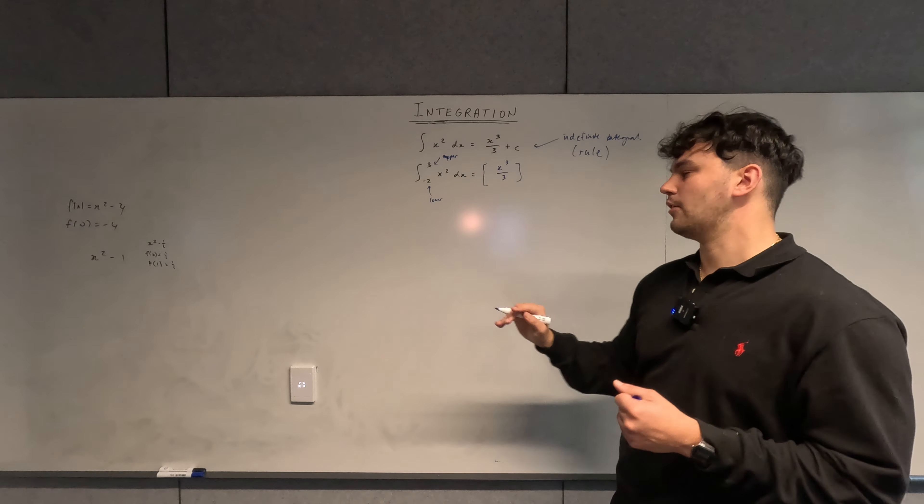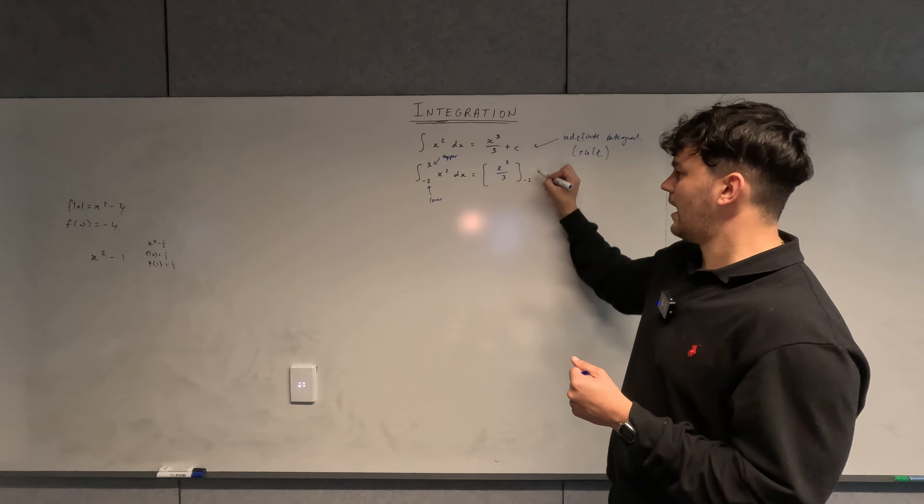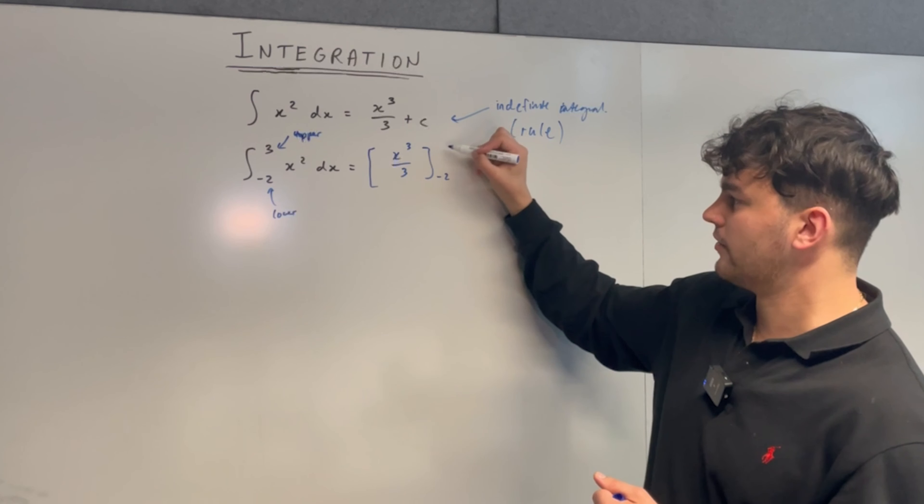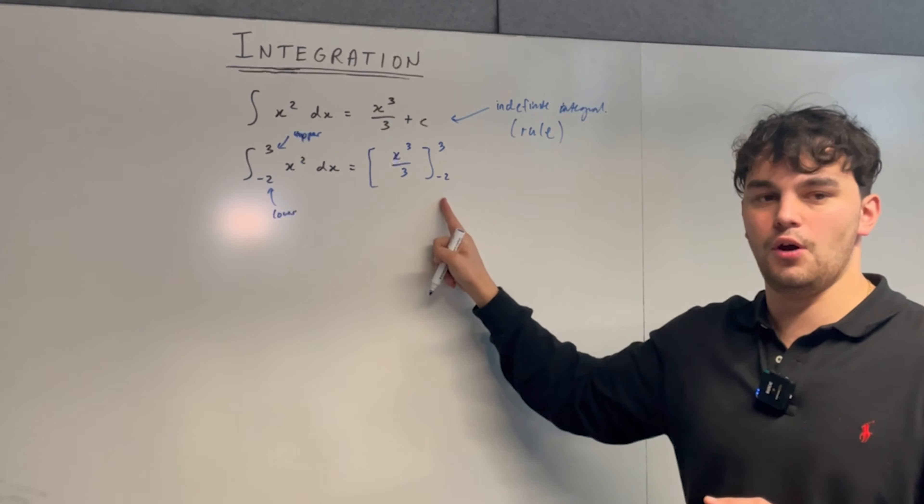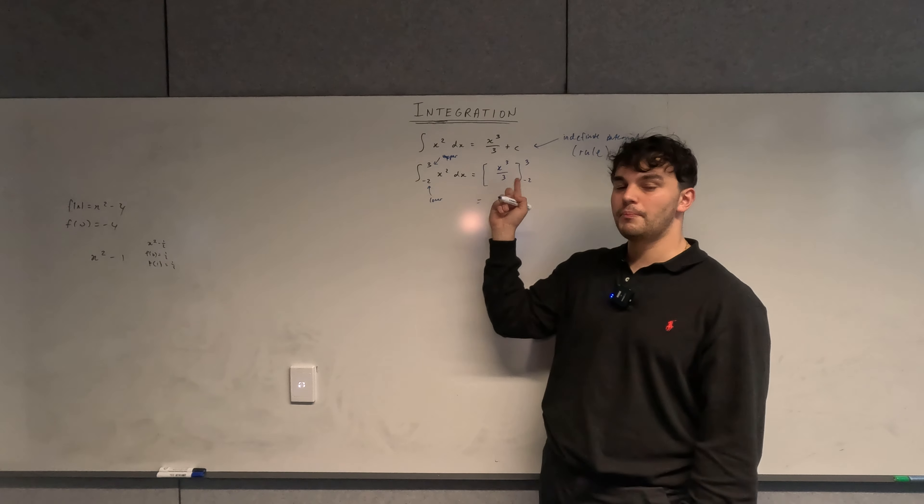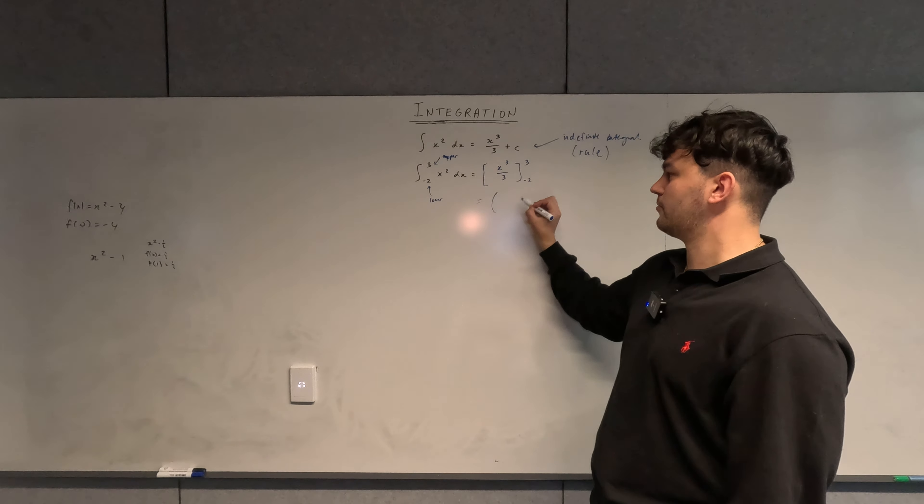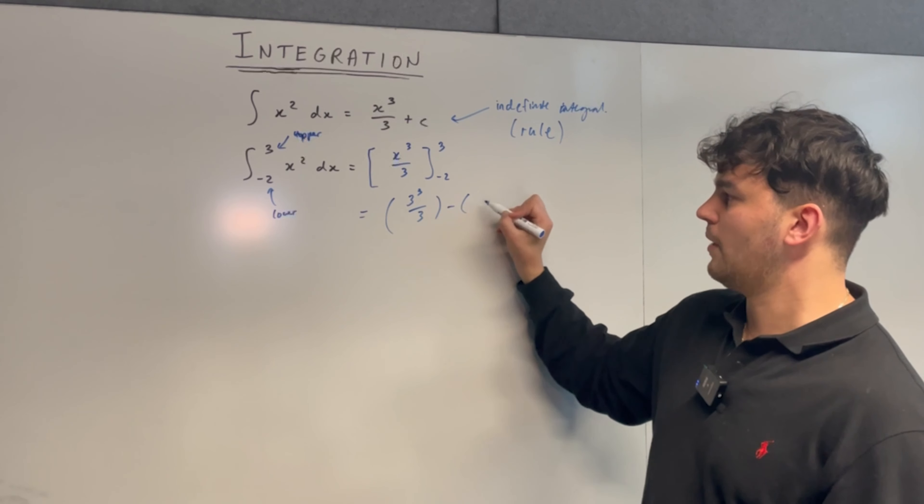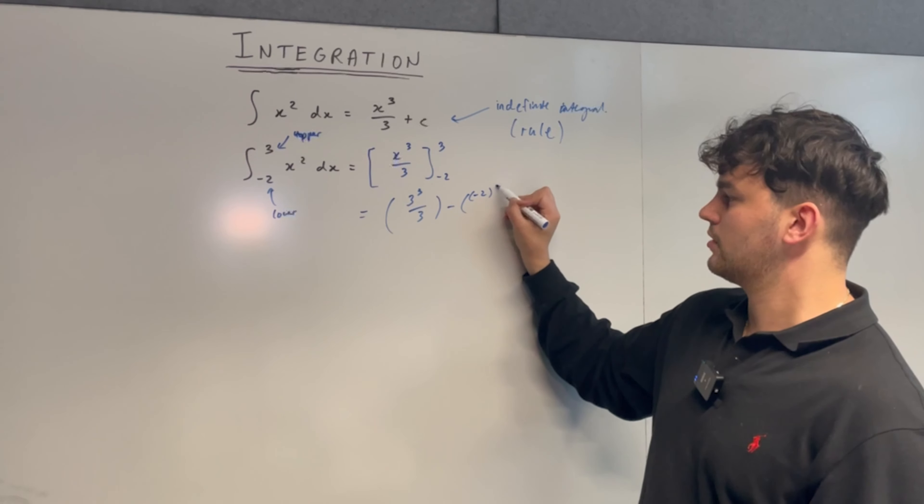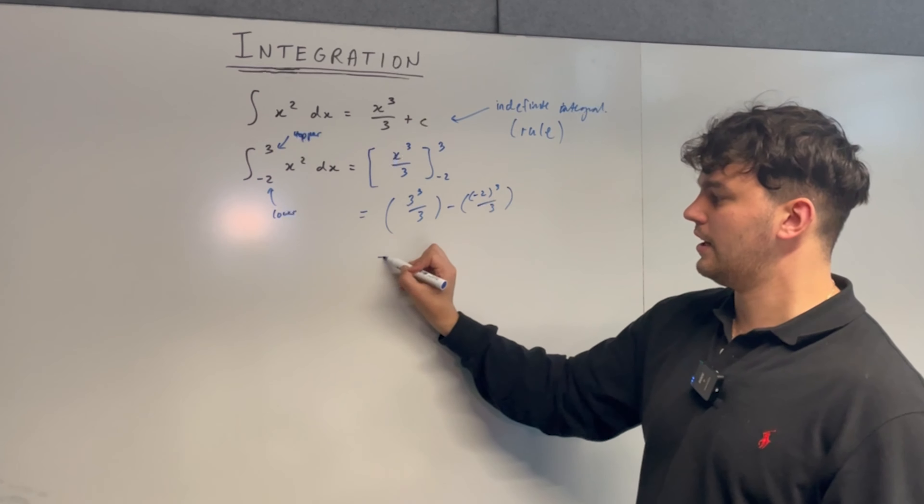Now we forget the plus c for now and I'll show you why at the end. Then at the end of these square brackets we put negative two at the bottom, three at the top, same as there but we just put it on the outside on the right. Now we substitute in the top bound minus the substitution of the bottom bound. So this becomes fairly straightforward: we get three cubed over three and then you minus negative two cubed over three, and from here it's just algebra.